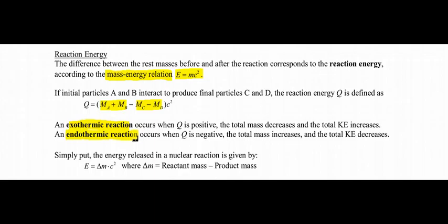So once again, to find the energy released in a nuclear reaction, you use E equals delta mc squared. Delta m is called the mass defect, and it's really the difference between the reactant mass and the product mass.